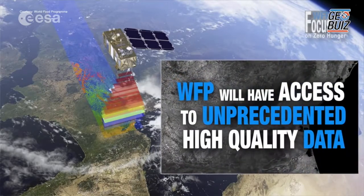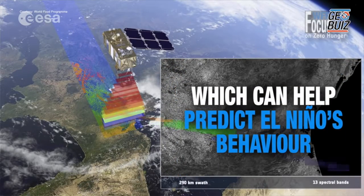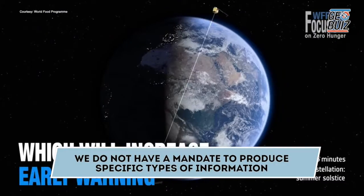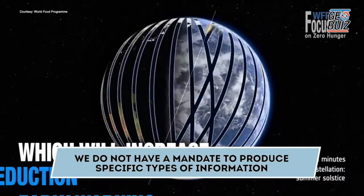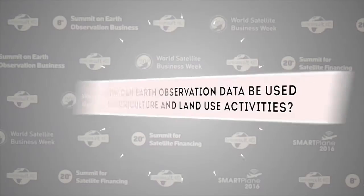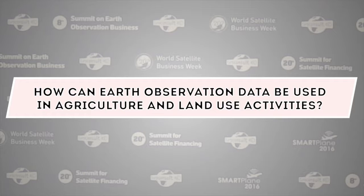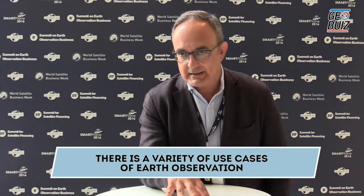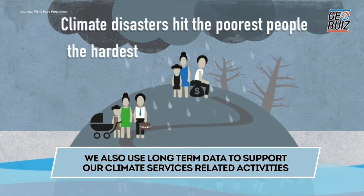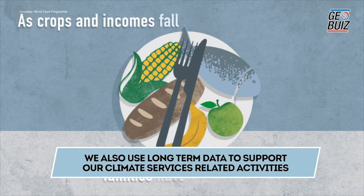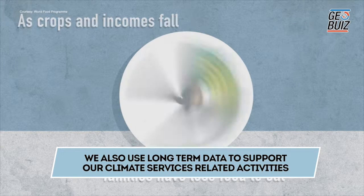If it serves the purposes of other users downstream, we are perfectly happy to share the data that we produce and the information we generate, but we don't have a mandate to produce specific types of information. In terms of early warning, we aim to have some early estimates of likely impacts on agricultural production. This is one of our main requirements because we are an operational agency focused on food assistance. We also use long-term data to inform our climate services-related activities.